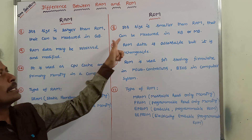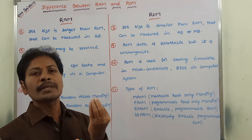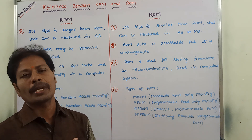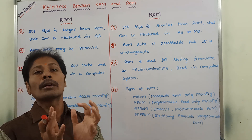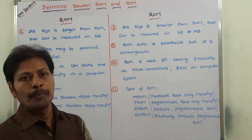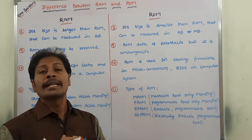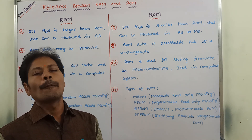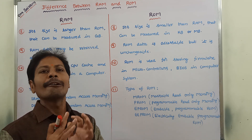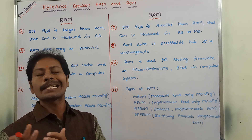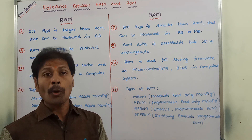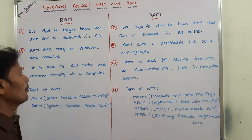Whereas, in the case of ROM, its size is smaller than RAM. The size of ROM is measured in megabytes or kilobytes — for example, 256KB, 512KB, 256MB, or 512MB. These are the various ROM sizes.